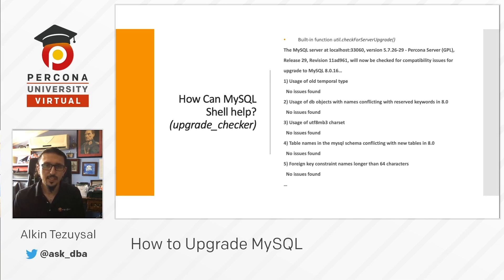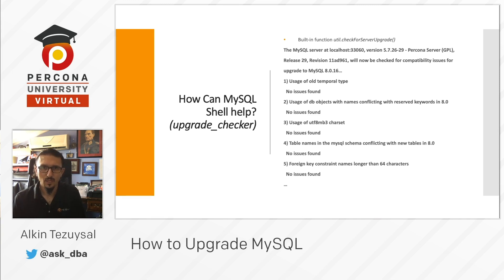MySQL shell can help the upgrade process significantly. It has the upgrade checker function that we can run on an existing MySQL version, and it will report if there are issues with our upgrade process. In this example, the upgrade checker utility was run against 5.7.26 targeting MySQL 8.0.16, and as you can see, it reported no issues on the sample database.